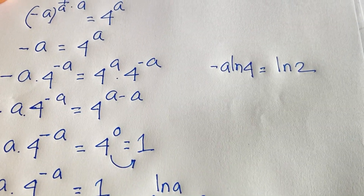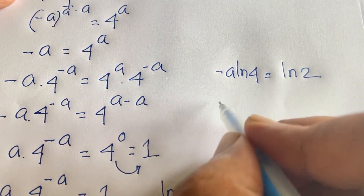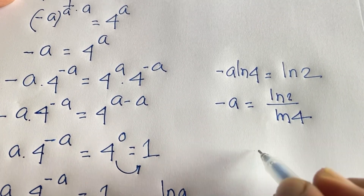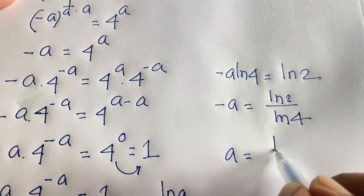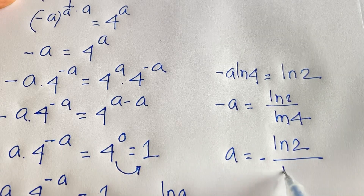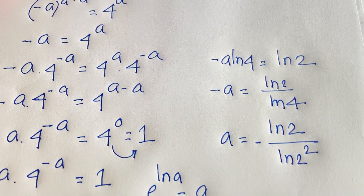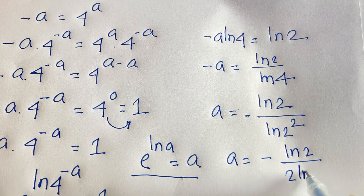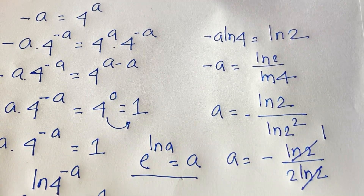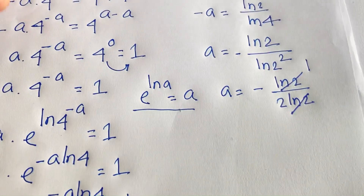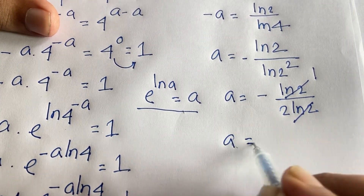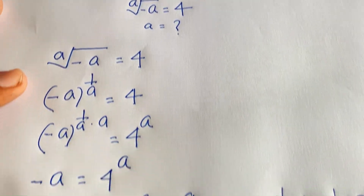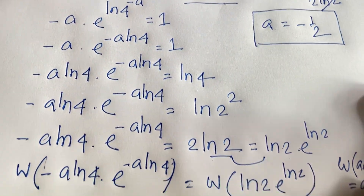From minus a ln 4 equals ln 2, we get minus a equals ln 2 over ln 4. Since ln 4 equals 2 ln 2, this simplifies to minus a equals ln 2 over 2 ln 2, and the ln 2 terms cancel, giving a equals negative one half. This is our final answer. Thank you all — please subscribe to my channel for more interesting videos. Goodbye and take care.